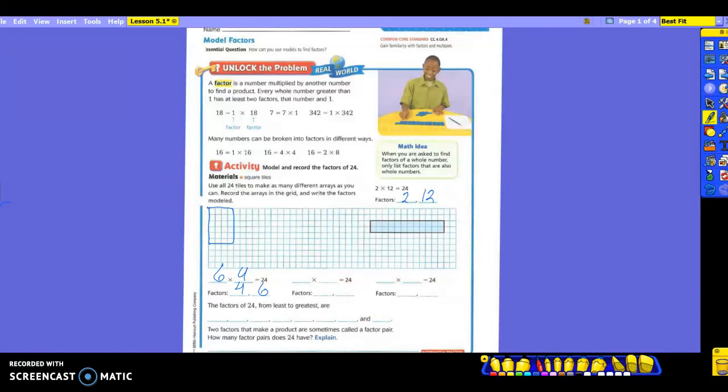So I'm going to come over here a little way. So now I'm going to do 3 down, and I'm going to go over 8, and I'm going to come down and make the array complete. So that means we're taking 3 times 8. And what are my factors, class? 3 and 8. Good.